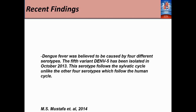Dengue fever was believed to be caused by four serotypes: Dengue 1, 2, 3, and 4. But in October 2013, a fifth serotype was isolated which, unlike the other four serotypes, follows the sylvatic cycle — meaning Dengue 5 spends most of its lifecycle cycling between wild animals and vector. It can occur in humans occasionally, but it is not like Dengue 1 through 4.